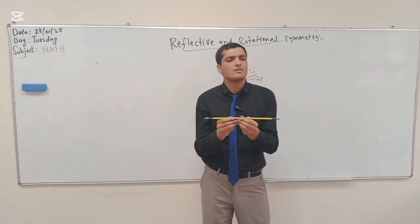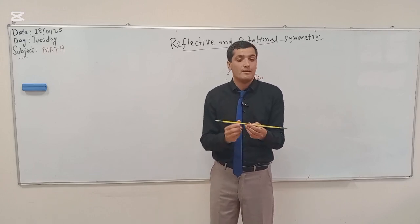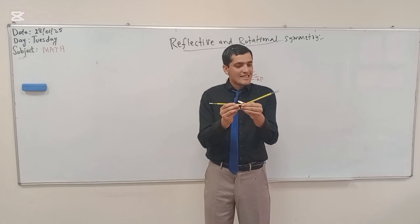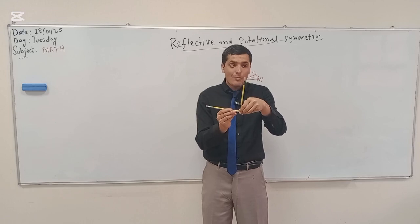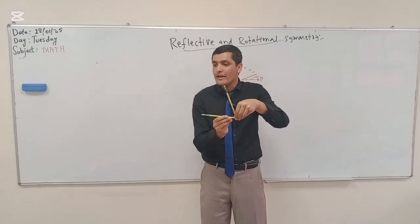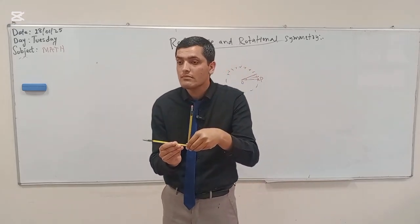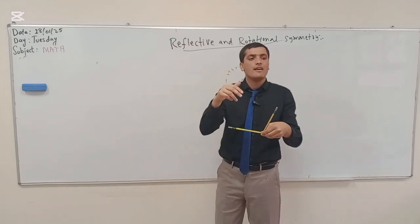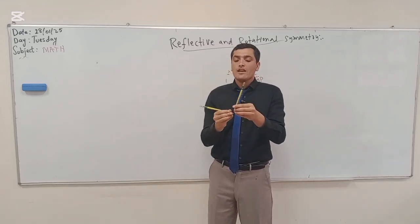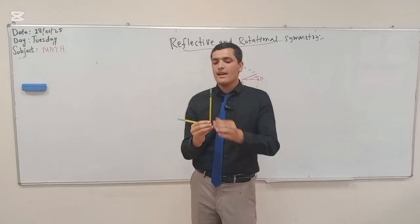90 degrees looks like the letter L — I'll come to that. Don't just memorize things; try to understand why. This is 180 degrees. This is less than 180. This is exactly half of 180, which is 90 degrees. Angles above 90 degrees are obtuse, those below are acute, and exactly 90 degrees is a right angle. So 90 degrees is exactly half of 180, and that is why L is 90 degrees.